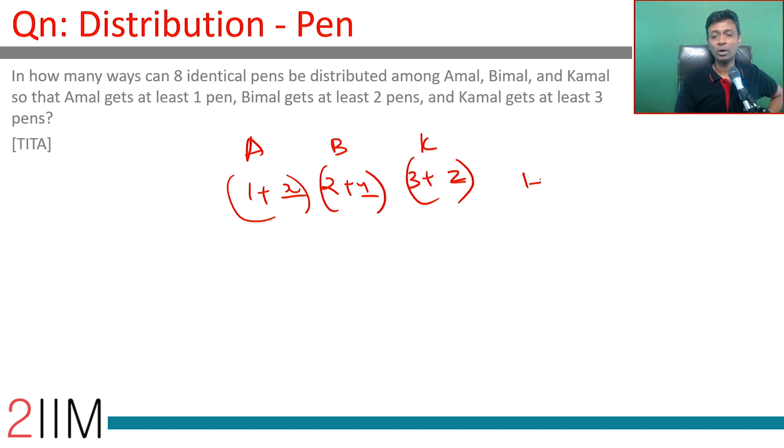So, 1 plus x plus 2 plus y plus 3 plus z equals 8, or x plus y plus z is 8 minus 6 which is 2.